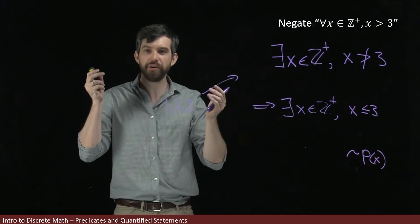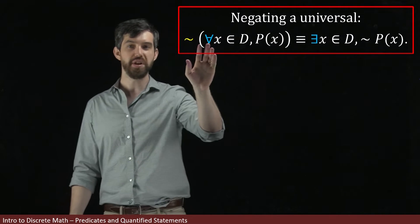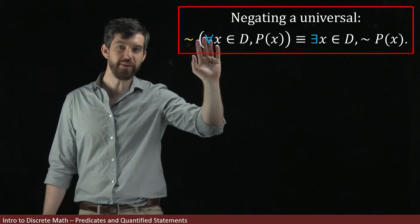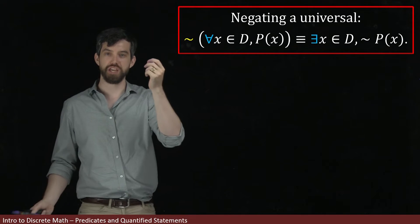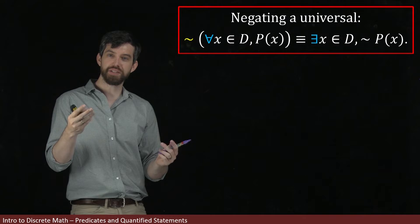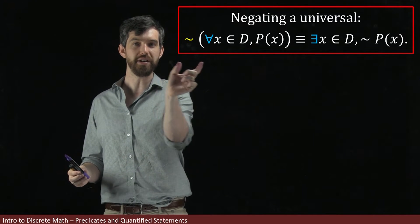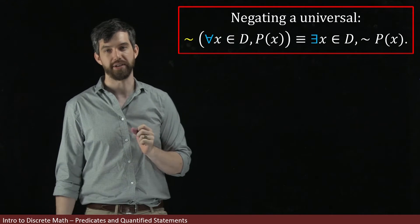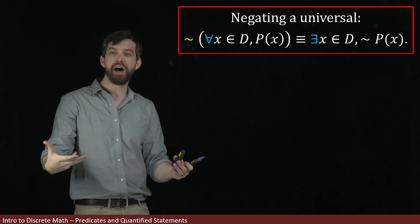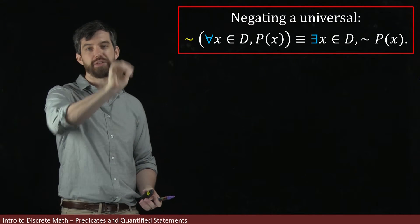Putting those two things together, here is the formal way to negate a universal. The not sign sticking out front means I am negating the whole statement in the middle. That statement is the typical universal quantifier on a predicate: for all x's in the domain, some property is true. When we negate it, two things happen: the for-all switches to a there-exists, and the negation ends up in front of the predicate. So if it is not the case that for all values some property is true, I'm saying there is at least one value where the property is false. That's what it means to negate a universal.